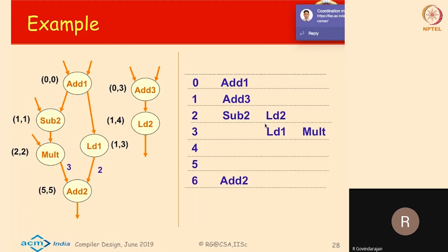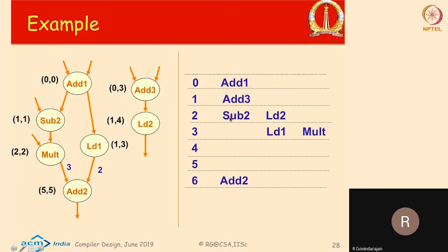In the reservation table, I make sure which resources are being used in what cycles. Here is one schedule where I scheduled add one and in the next cycle scheduled add two, because I have only one integer functional unit. Both add one and add three are ready at time step zero, but I scheduled add one first, then add three. In time step one, both subtract two and add three would be ready, but in this schedule add three is scheduled in time step one and subtract two in time step two. Because of this ordering, multiply is scheduled one time step later, and the dependent add is scheduled in cycle six.